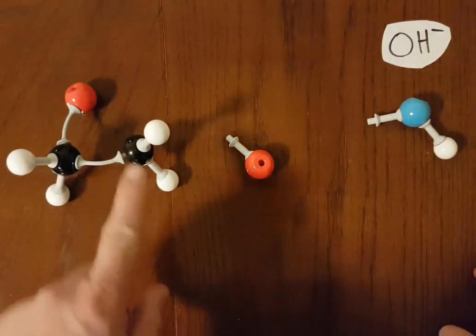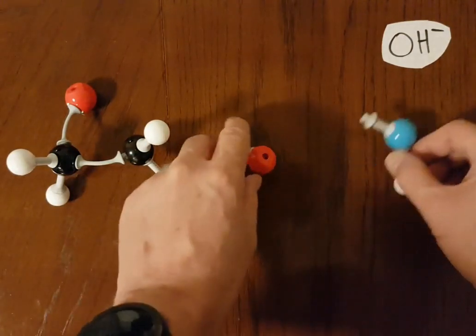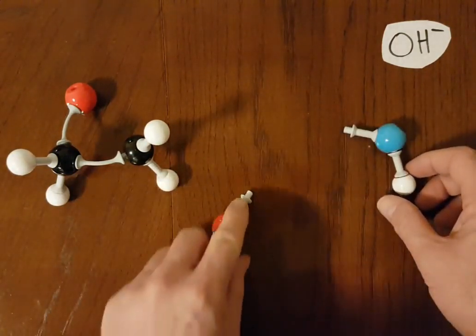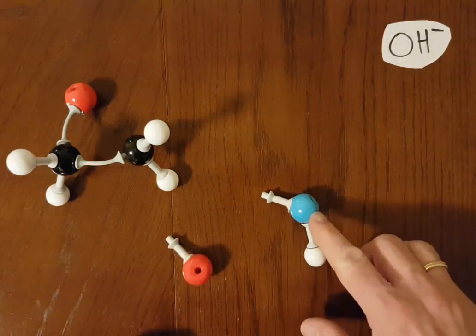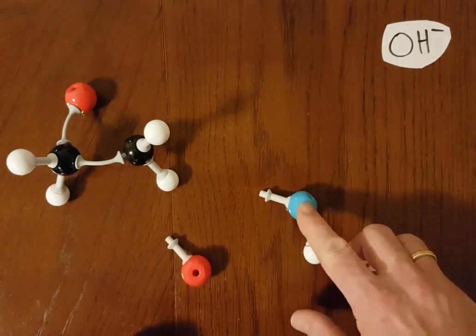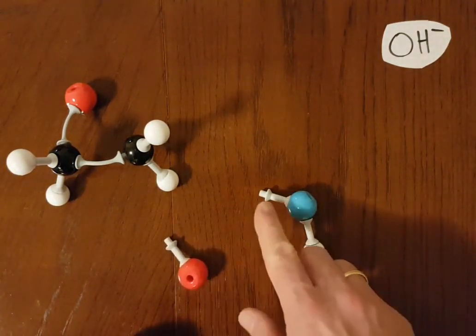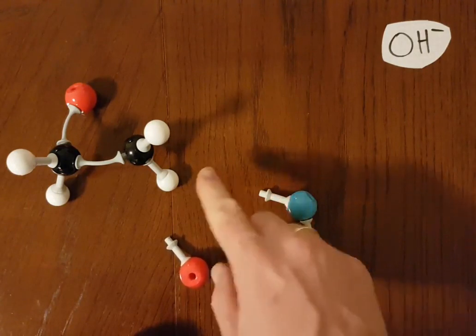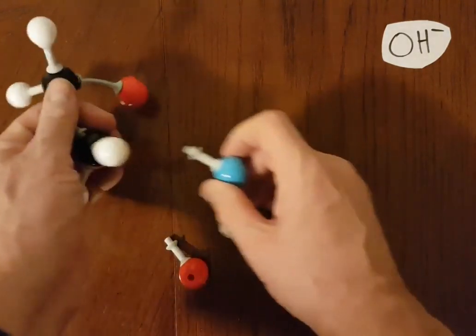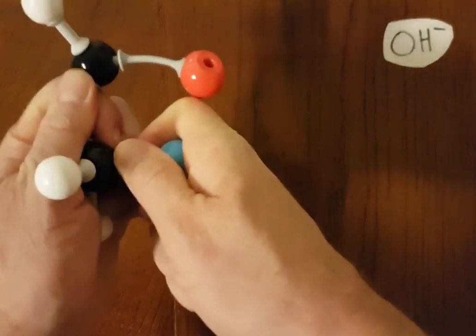So, we have the carbocation, and we have these two negative ions here, the hydroxide ion and the bromide ion. Now, it just happens that the hydroxide ion is a better Lewis base than the bromide ion. Lone pair of electrons to be donated, and they react.